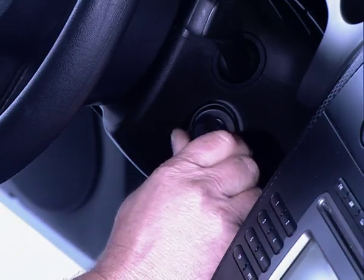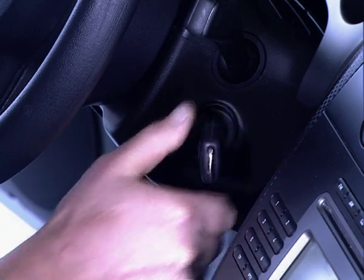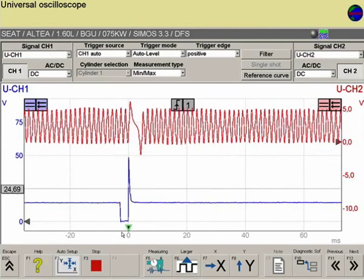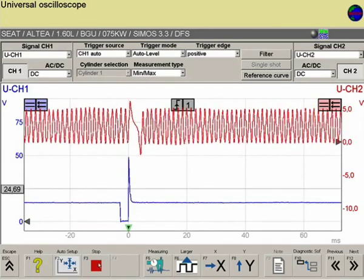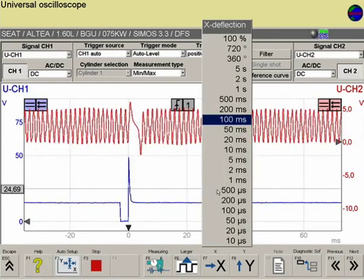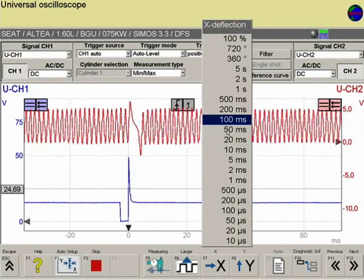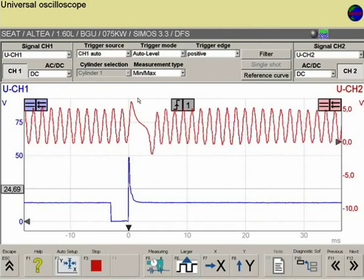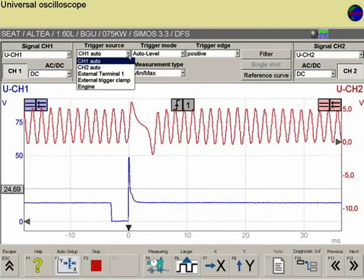The engine is then restarted and both signals can be viewed together on the monitor. In order that the signals are clearly displayed on the screen, it may be necessary to make adjustments to the X and Y axes. Further adjustments at the trigger source settle the image.